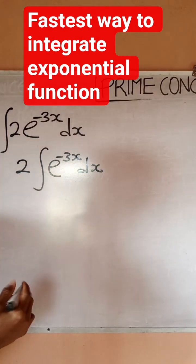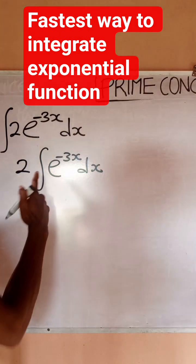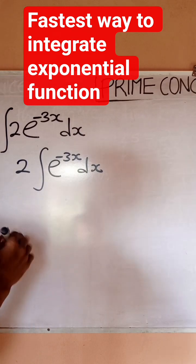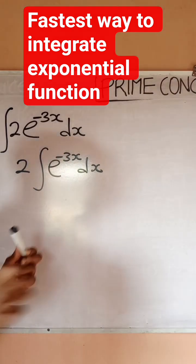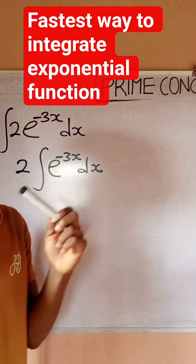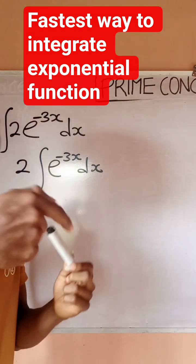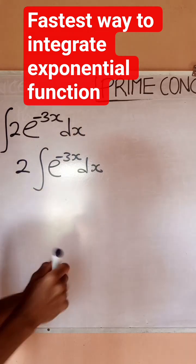So this is what I want to integrate. Now a simple way to integrate this under exam condition is to take note of the power of the exponent, which is negative 3x. So I would differentiate the power, then reverse it. Differentiate the power, then invert it.